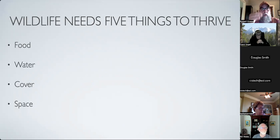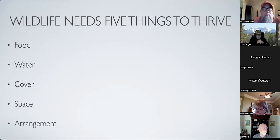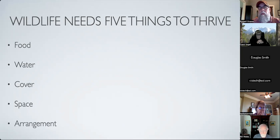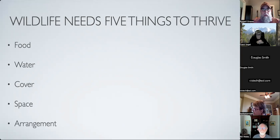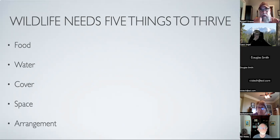Food, water, cover, space, and the last thing is arrangement. Arrangement is the relation of all four of those things to one another - how wildlife utilizes food, water, cover, and space to live their life most efficiently. It's as simple as this: if you lived in a neighborhood where all the grocery stores and restaurants closed, you'd still have water, a place to live, and space to move around, but without food your neighborhood becomes untenable. You'd have to go somewhere else. Same with water and all the other needs.